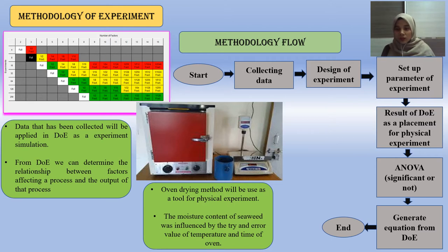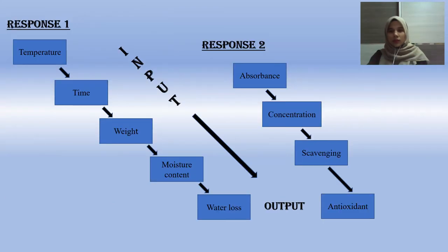From the results, we will produce ANOVA to determine whether values are statistically significant. From the significant values, we can derive equations for better results. The two responses investigated are water loss and antioxidant percentage. There are 4 input factors for water loss and 3 input factors for antioxidant.